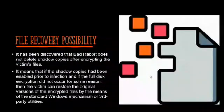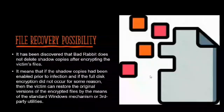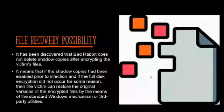File recovery possibilities: Although the attackers guaranteed that after successful payment they would provide the encryption key to restore all data, it was later discovered that BadRabbit does not delete shadow copies after encrypting the victim's files. Shadow copies are a Microsoft Windows feature that creates backup copies of files even when in use. This means that if shadow copies were enabled and full-disk encryption did not occur, the victim can restore original files through standard Windows mechanisms.